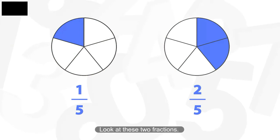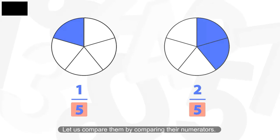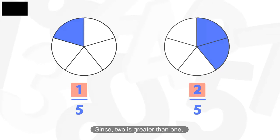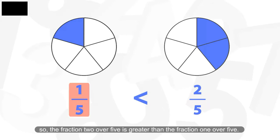Look at these two fractions. They both have the same denominator, so they are like fractions. Let us compare them by comparing their numerators. Since 2 is greater than 1, so the fraction 2 over 5 is greater than the fraction 1 over 5.